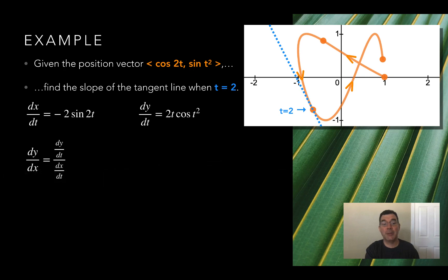dy dx is going to be the quotient of those two things, dy dt over dx dt, and I'm just going to rewrite those in fraction form. And when I plug in 2, I get 4 times the cosine of 4 over negative 2 times the sine of 4, and that gets me something close to negative 1.727, which looks like the slope of that dotted line that I've already drawn on the graph.